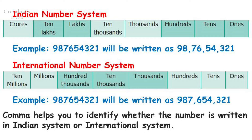Next, the international number system consists of 1s, 10s, 100s, 1000s, 10,000s, 100,000s, millions, 10 millions and forth.